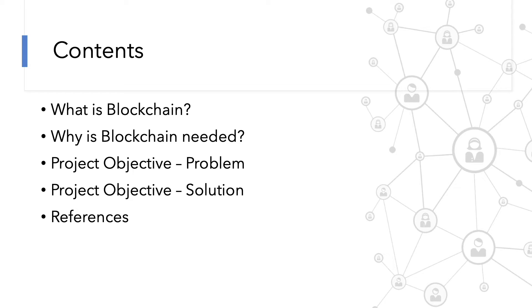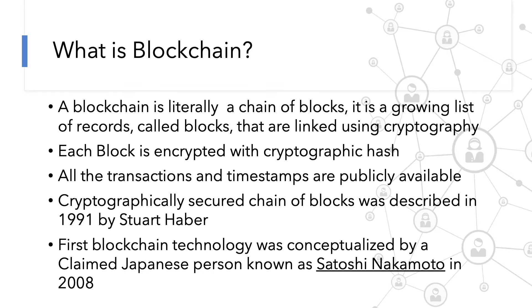I will be giving out much more detailed information in further videos. So, what exactly is blockchain? A blockchain is literally a chain of blocks — it is a growing list of records called blocks that are linked using cryptography. Each block contains data which is encrypted with a cryptographic hash of the previous one.